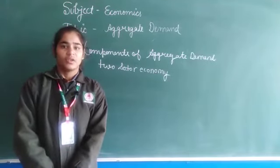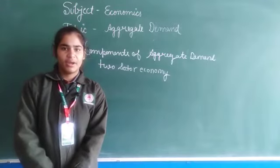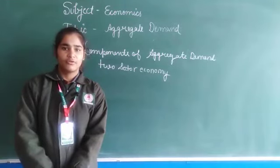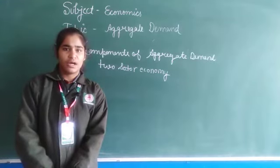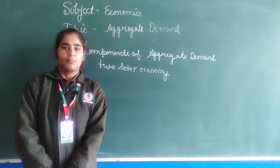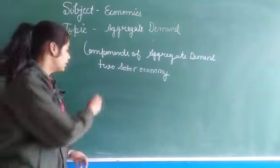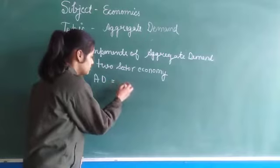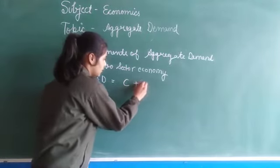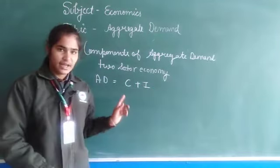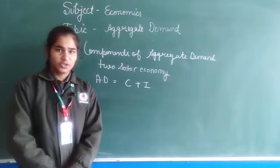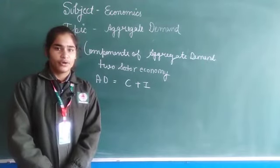In household consumption, it refers to the consumption made by the consumer on final goods and services. And producer consumption refers to the investment made by the producer in the process of making final goods. So here, AD, which means aggregate demand, is equal to C plus I. Here, C refers to household consumption and I refers to producer consumption.